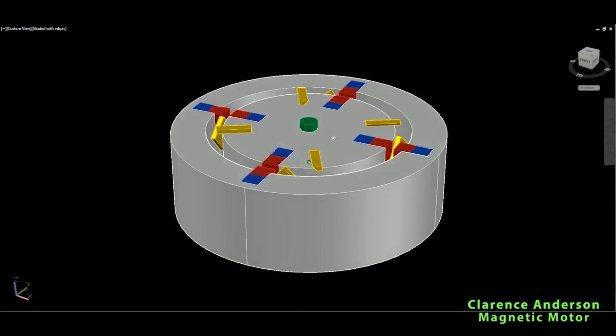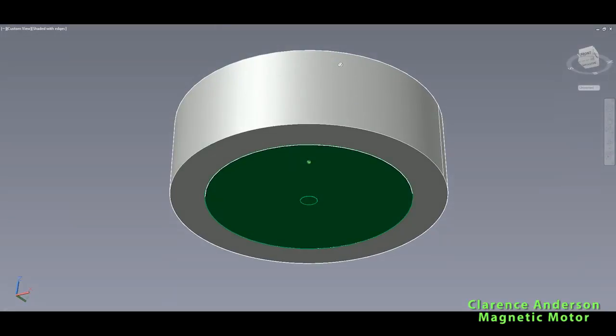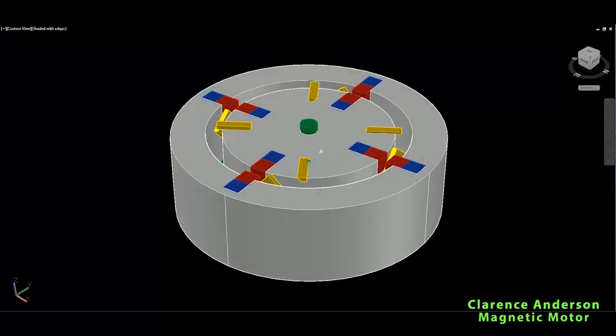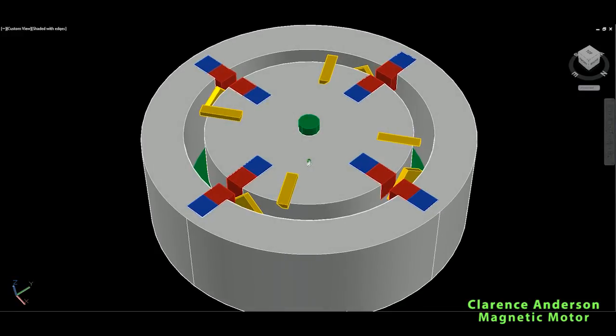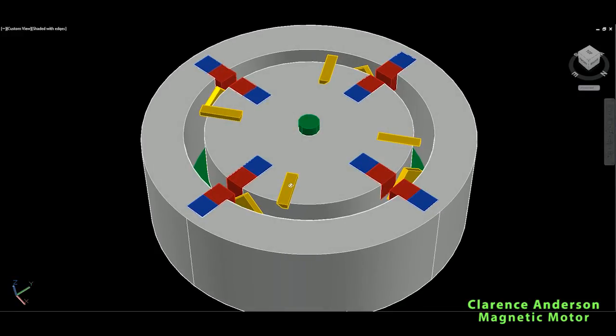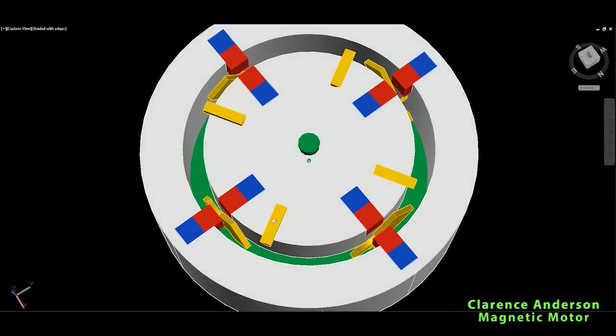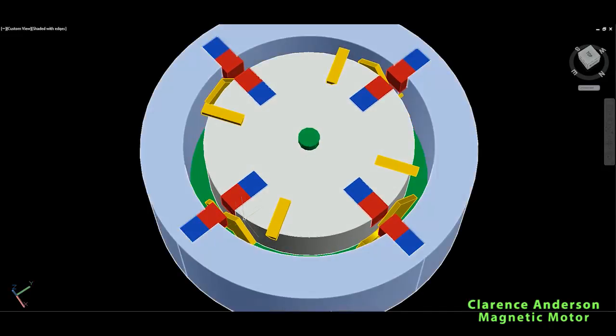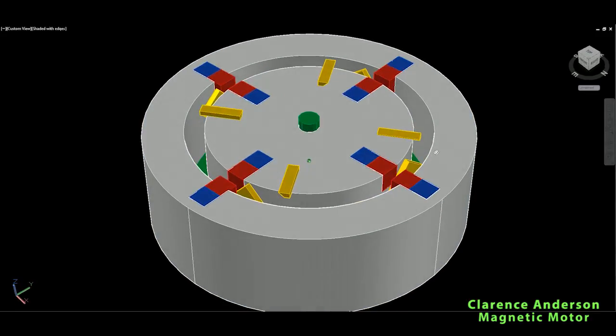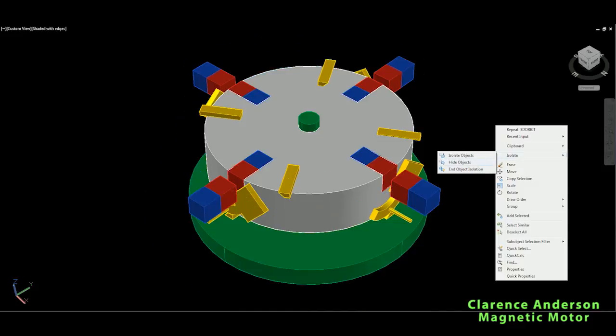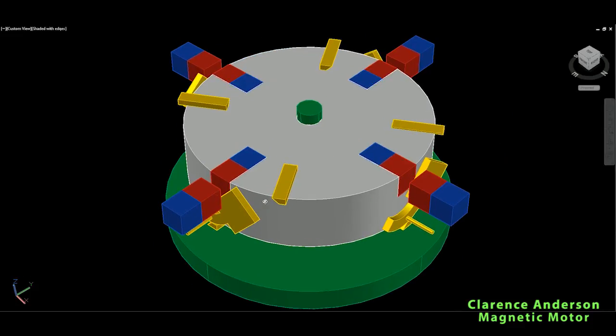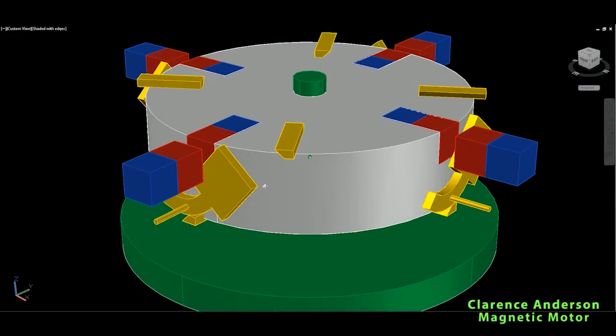Okay viewers, this is the Clarence Anderson magnetic motor and its construction. As you saw outside, I demonstrated these permanent magnets and their interaction with the high permeability material, which in this case is usual steel. This will be represented by these yellow plates between the magnets. Let me hide the stator so it's more visible inside.